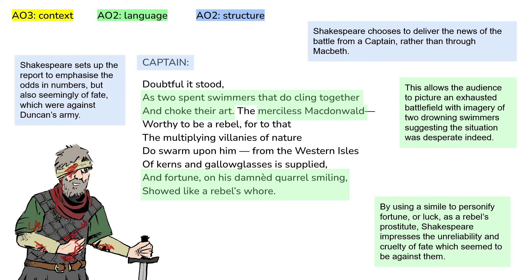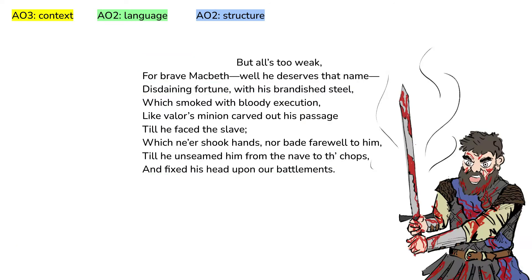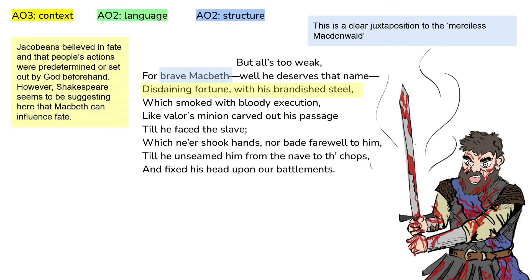Structurally, Shakespeare sets up the report to emphasise the odds in numbers, but also seemingly of fate, which were against Duncan's army. This serves to heighten the sense of Macbeth's heroism, as he is introduced to the audience as 'brave Macbeth,' a clear juxtaposition to the merciless McDonwald. He is said to disdain fortune with his brandished steel, suggesting Macbeth is a character who takes fortune into his own hands. Jacobeans believed in fate and that people's actions were predetermined by God; however, Shakespeare seems to be suggesting here that Macbeth can influence fate, since disdaining fortune implies he has no regard for the powers which might seek to control him. Fate and free will is established as a key theme here, with Shakespeare introducing the idea that Macbeth will be a character who takes fate into his own hands.